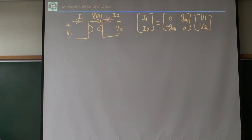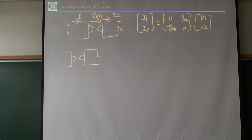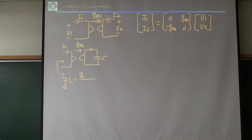We already saw that if I connect a capacitor here with gm1, this becomes a grounded inductor: L = C/gm1². So we can implement this gyrator using a transconductor (gmc).